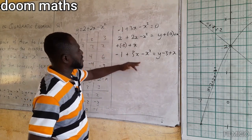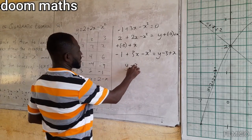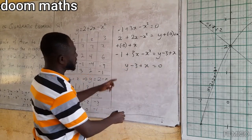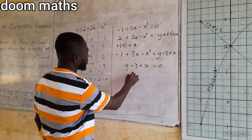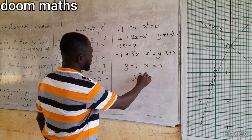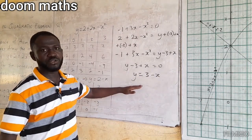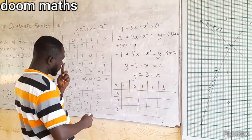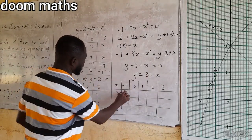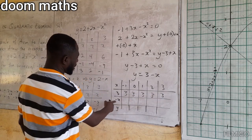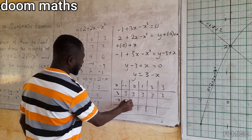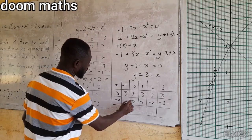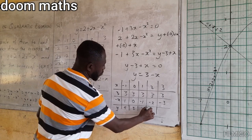Since negative 1 plus 3x minus x squared equals 0, we have y minus 3 plus x equals 0, which gives y equals 3 minus x. We draw this new relation on the graph. The constant 3 runs through, and negating x gives values 1, 0, negative 1, negative 2, negative 3, so y values are 4, 3, 2, 1, and 0.